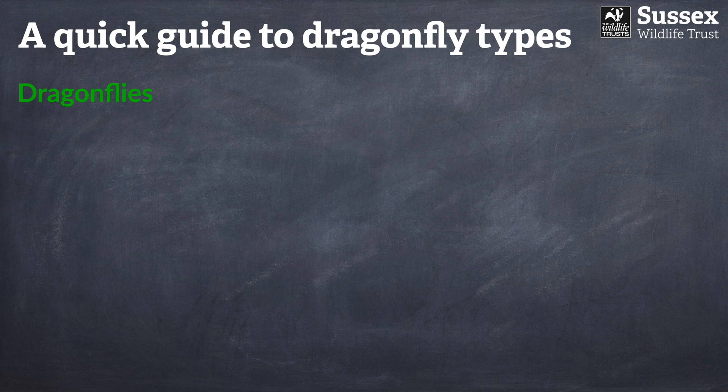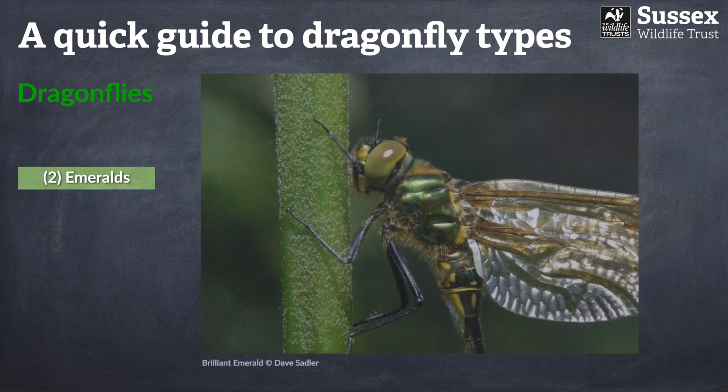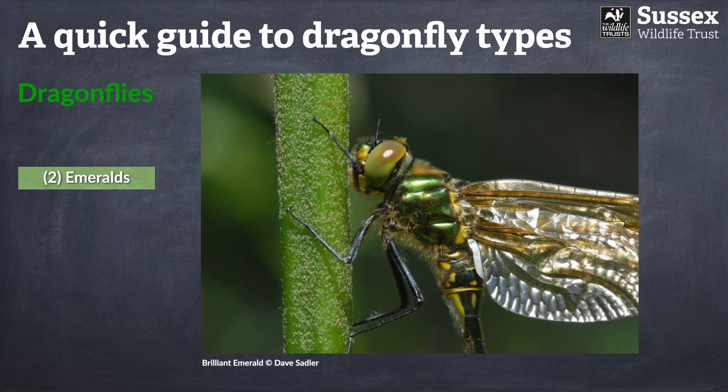The next group are the so-called emerald dragonflies. They all display a beautiful metallic emerald coloration, but all three species in the group are very localised in their distribution, so perhaps not that commonly seen.